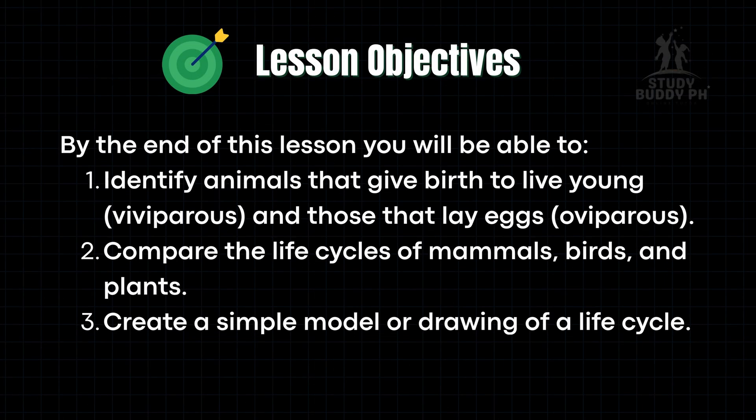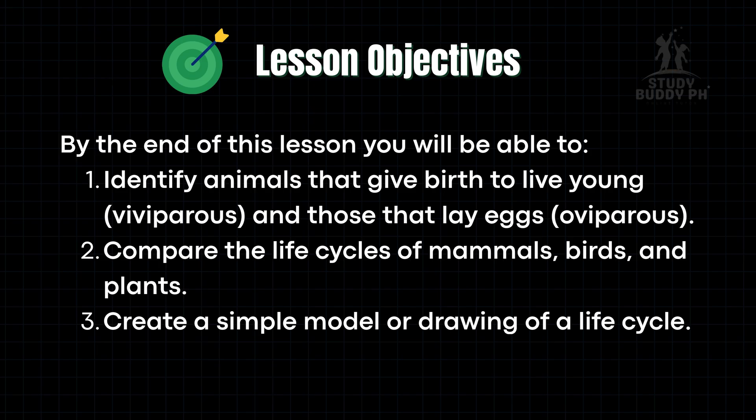By the end of this lesson, you will be able to identify animals that give birth to live young — viviparous — and those that lay eggs — oviparous. You will also compare the life cycles of mammals, birds, and plants, and create a simple model or drawing of a life cycle.